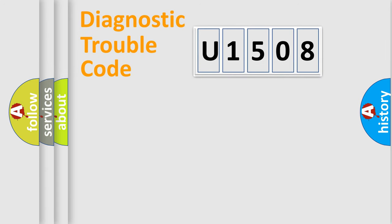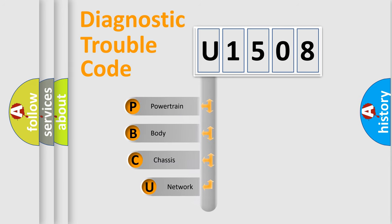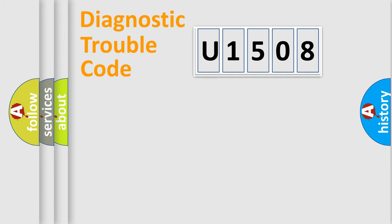Let's do this. First, let's look at the history of diagnostic fault code composition according to the OBD2 protocol, which is unified for all automakers since 2000. We divide the electric system of the automobile into four basic units: Powertrain, Body, Chassis, and Network.